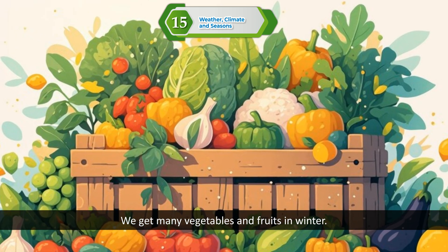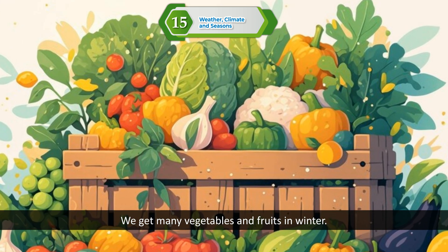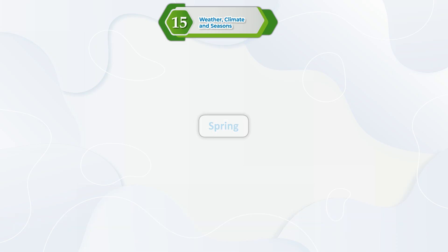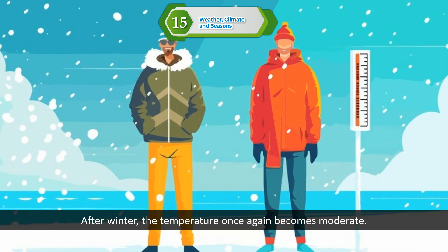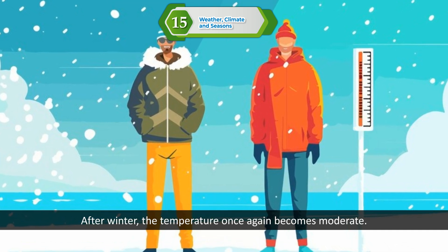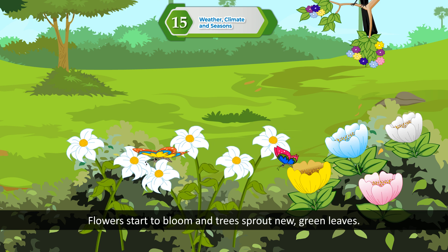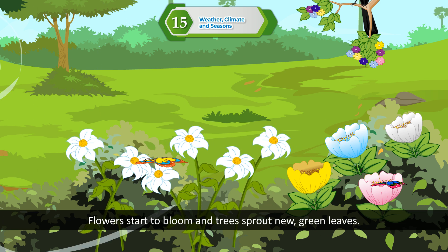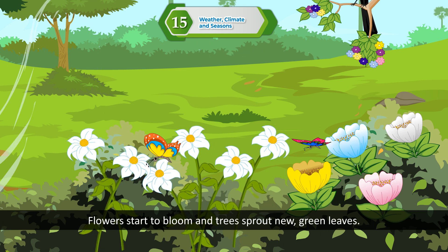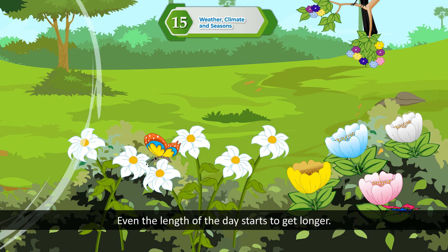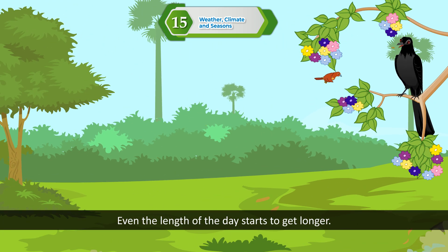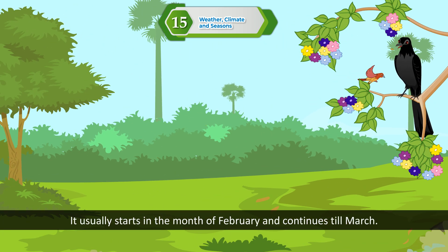We get many vegetables and fruits in winter. Spring. After winter, the temperature once again becomes moderate. Flowers start to bloom and trees sprout new green leaves. Even the length of the day starts to get longer. It usually starts in the month of February and continues till March.